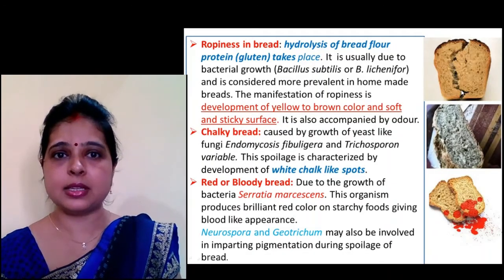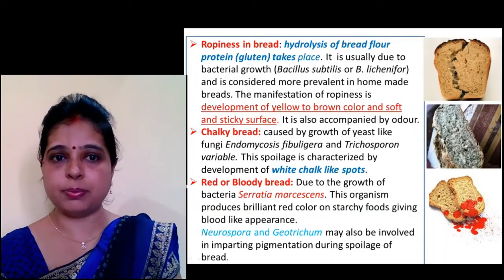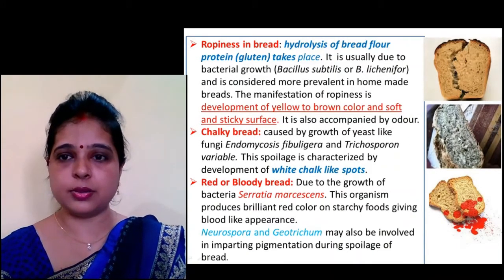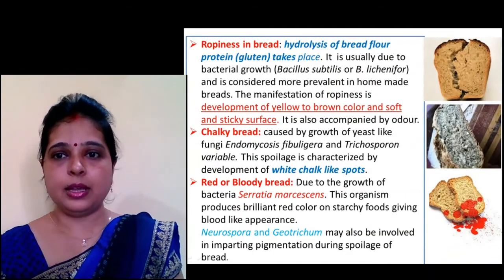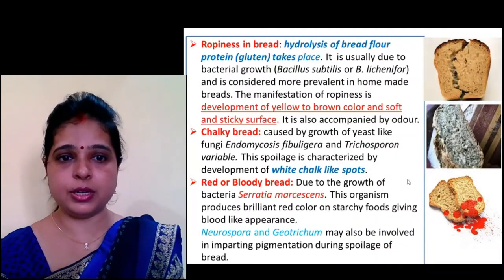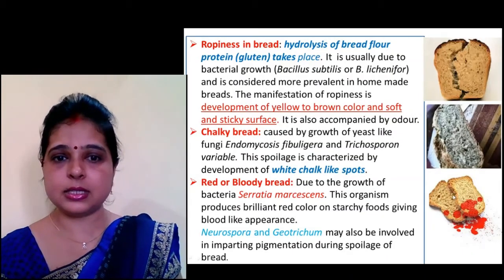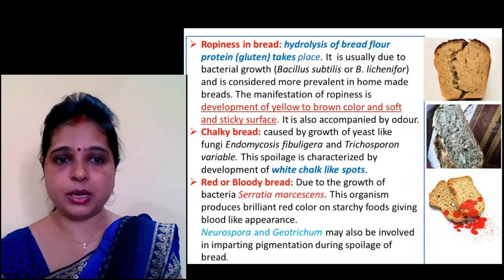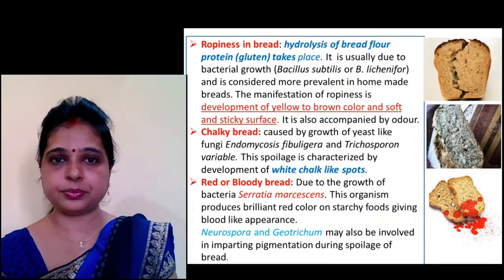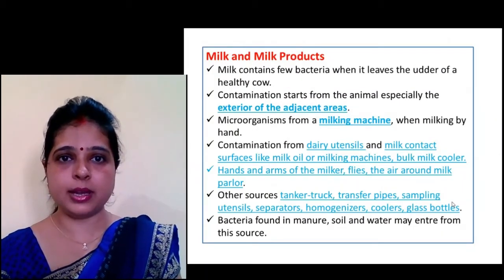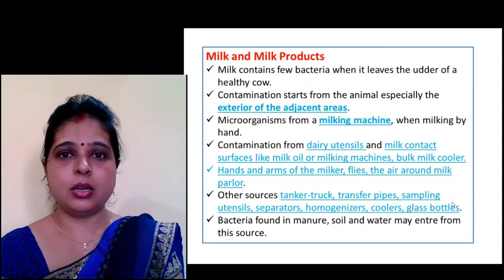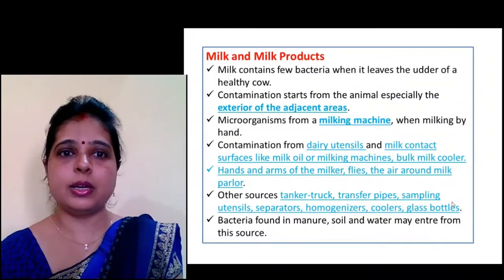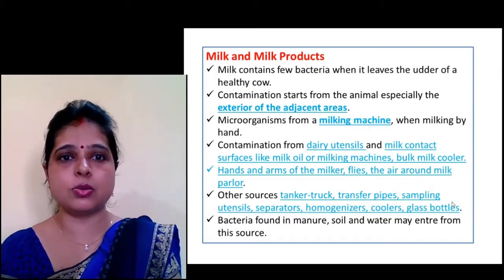Ropiness in bread is caused by Bacillus subtilis. The second type is chalky bread, characterized by the development of white chalk-like spots in the bread. The third is red or bloody bread, caused by excess growth of Serratia, resulting in a brilliant red color on starchy foods giving a blood-red appearance; it is also caused by Neurospora and Gliocladium. Regarding milk spoilage, when milk comes from a cow or other domestic animal, it is initially free from microorganisms.